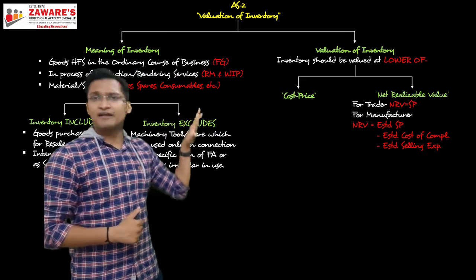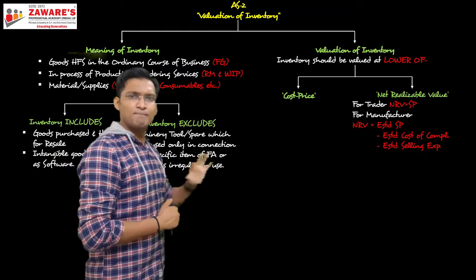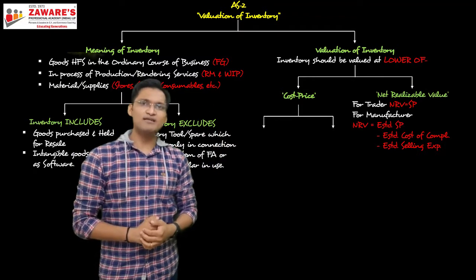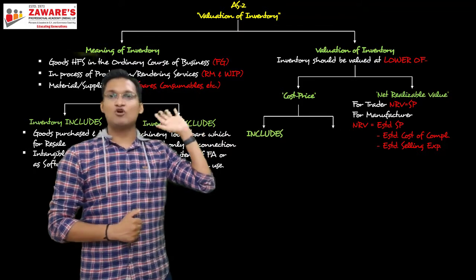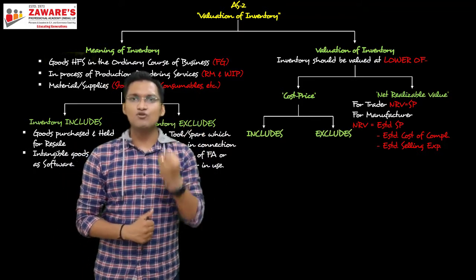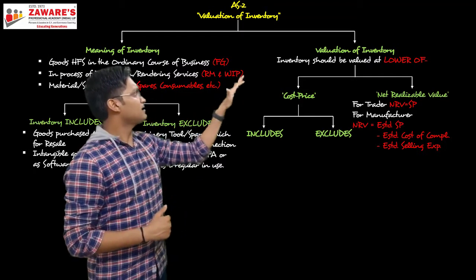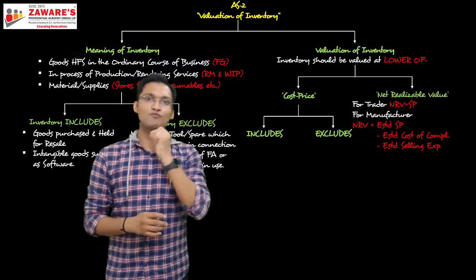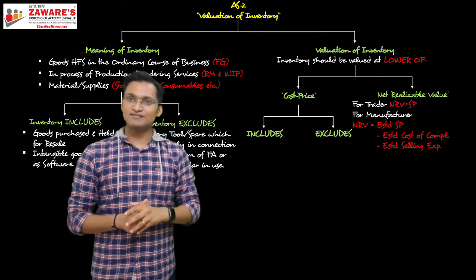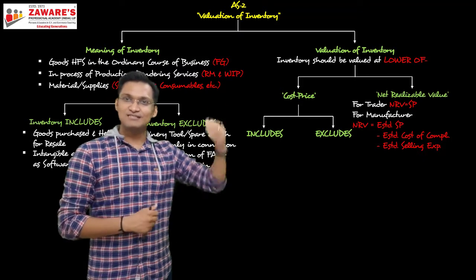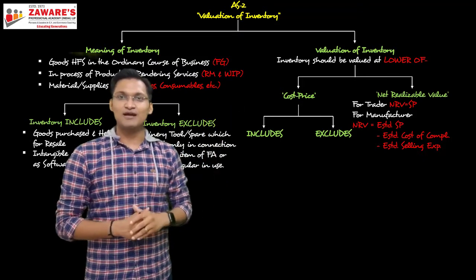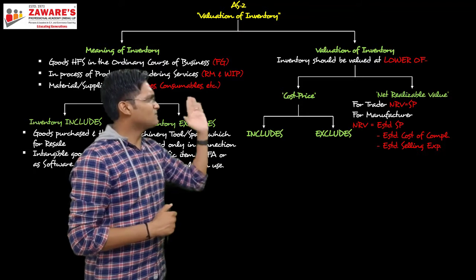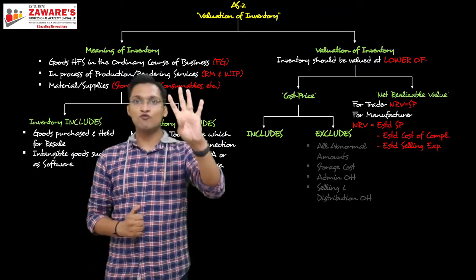Now we come to the most important segment of this entire chart: cost price. We'll see what is included in cost and what is excluded. Cost excludes four things and includes three things. Whatever we're reading here connects to CA Foundation Chapter 6 (inventory valuation), consignment accounts, and Cost & Management Accounting (material cost). All of these come together here. The four exclusions from cost are: first, all abnormal items; second, storage costs; third, admin overheads; fourth, selling and distribution overheads.